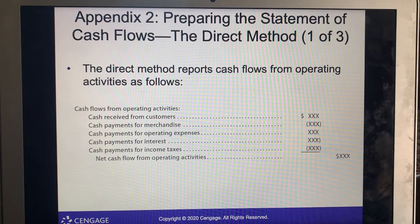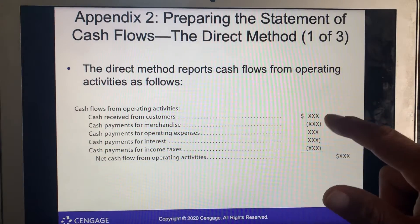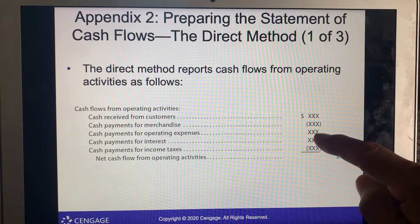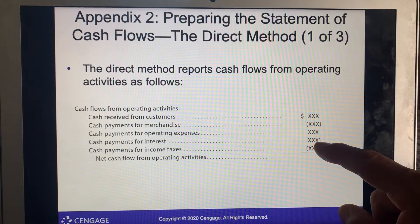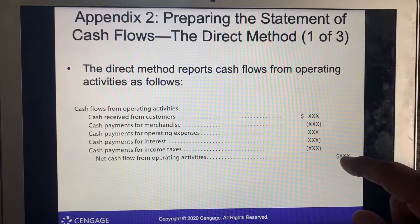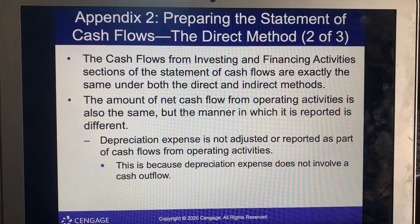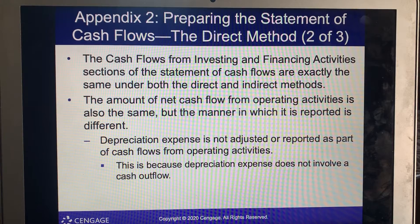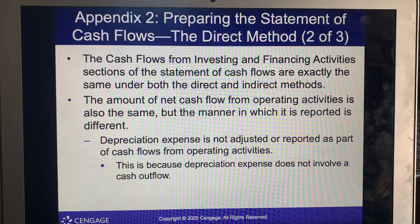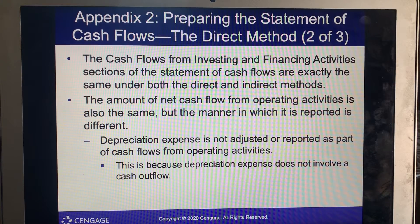Here is an example of the direct method: cash received from customers, cash payments for merchandise, cash payments for operating expenses, cash payments for interest, cash payments for income taxes, and net cash flow from operating activities. The cash flow from investing and financing activities sections are exactly the same under both direct and indirect methods. The net cash flow from operating activities is the same amount, but reported differently. Depreciation expense is not adjusted under the direct method because it does not involve a cash outflow.